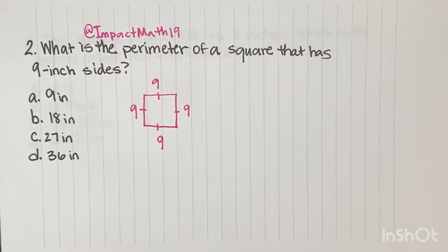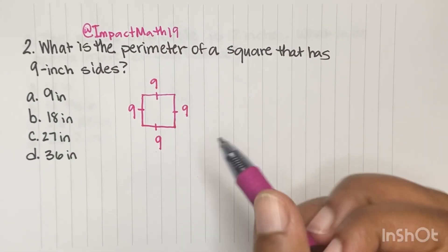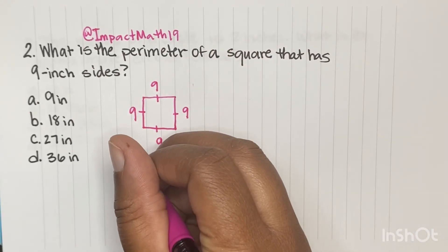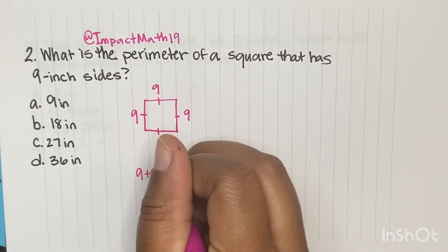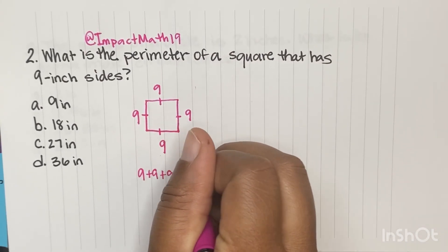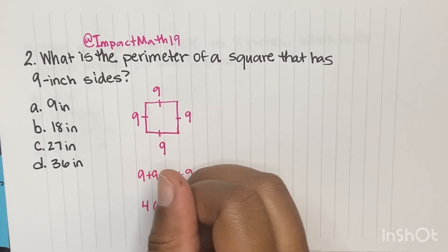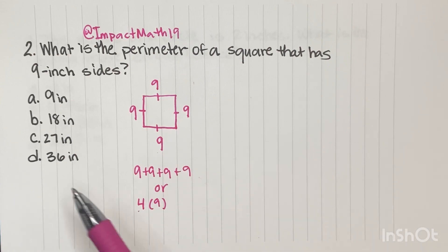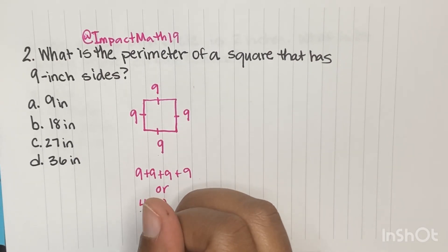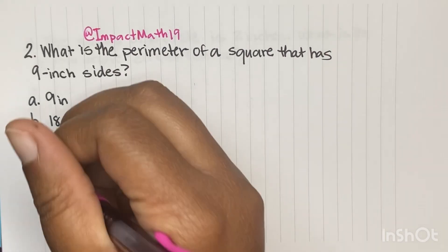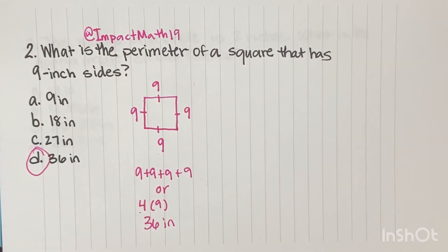Remember, you are finding a perimeter. So when you find the perimeter, you have to add up all the sides. So we do 9 plus 9 plus 9 plus 9, or you can do 4 times 9. And 4 times 9 is 36. So D would be our answer.